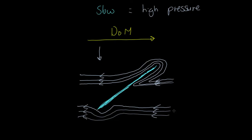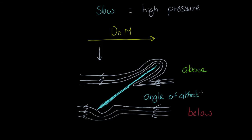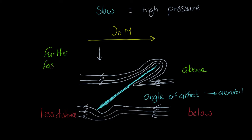An air molecule hitting the javelin below simply has to travel a short distance underneath to reach the back. Above the javelin, the air has to travel much further. Now, this javelin has been thrown with what we call an angle of attack, and this creates what we call an aerofoil. An aerofoil is an object where the air traveling over the top has to go further than the air traveling underneath. The air going over the top has to travel further — agreed?